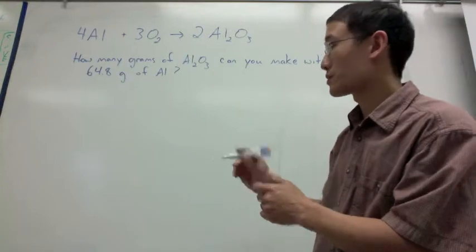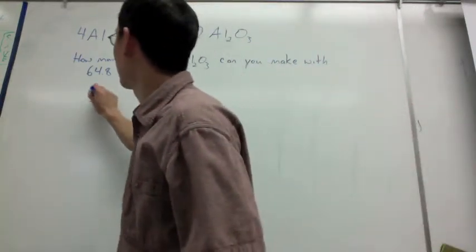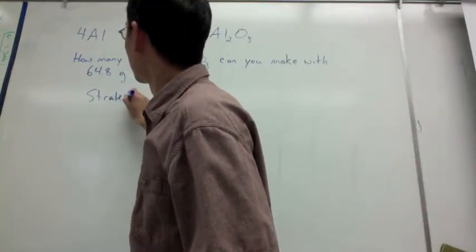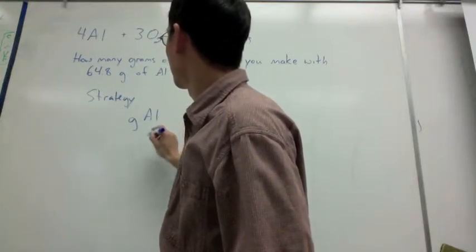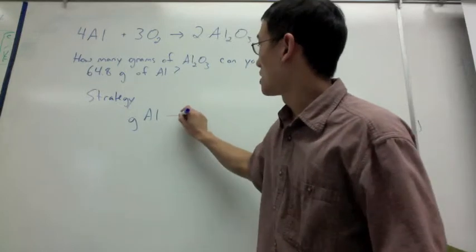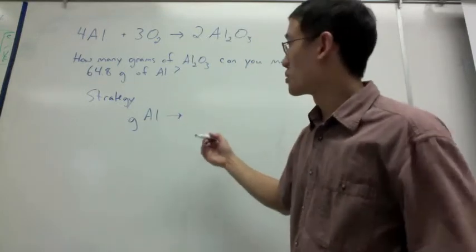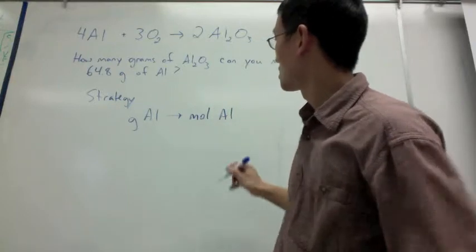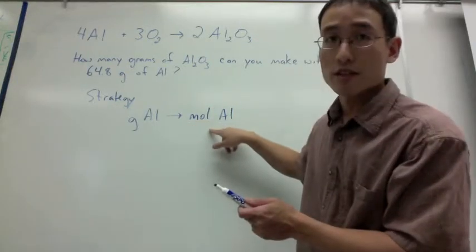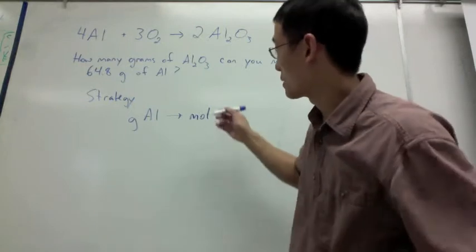I have to do a couple steps to do this. And so the strategy is, if I have grams of aluminum, what I can do with grams of aluminum is convert to moles. To do that step, we use molar mass from the periodic table.